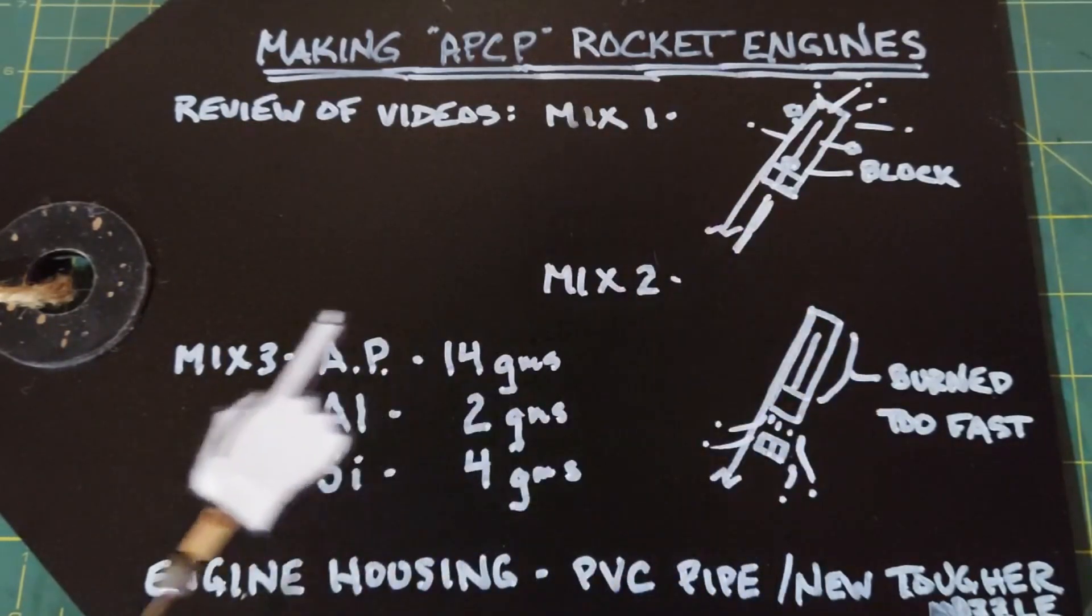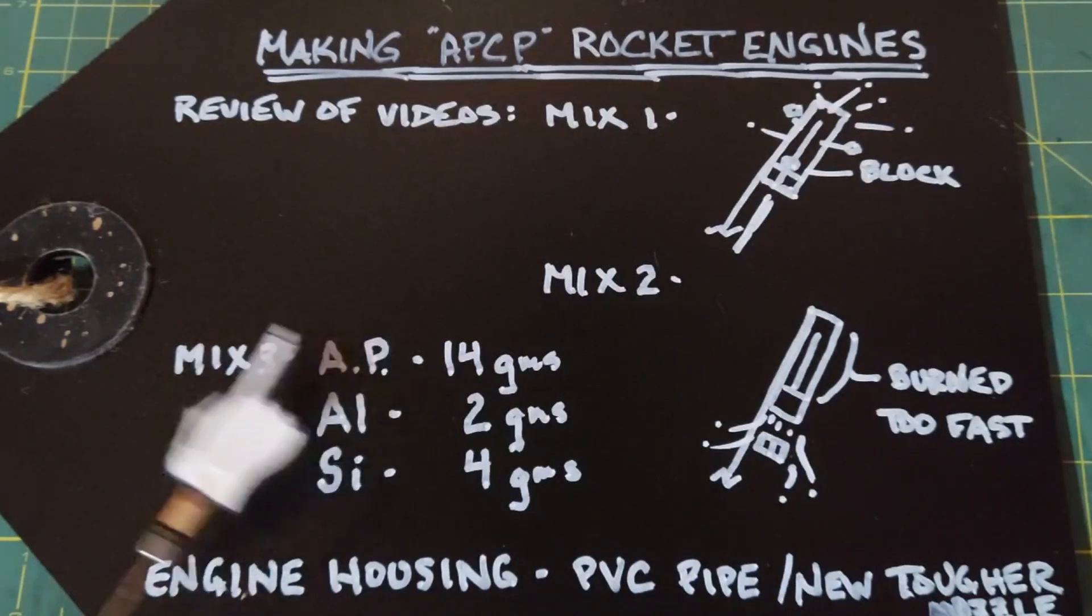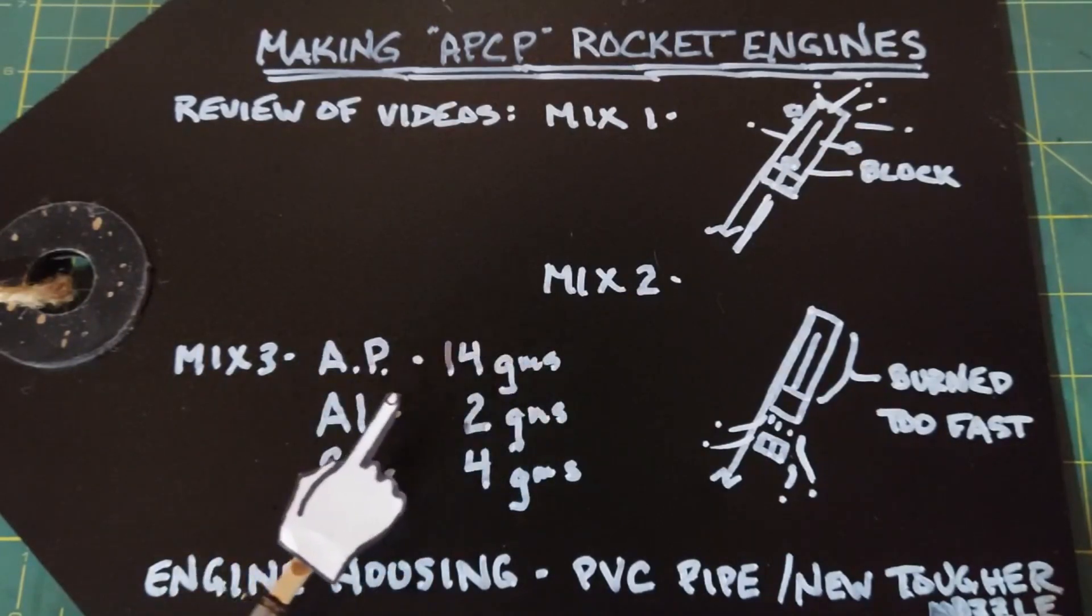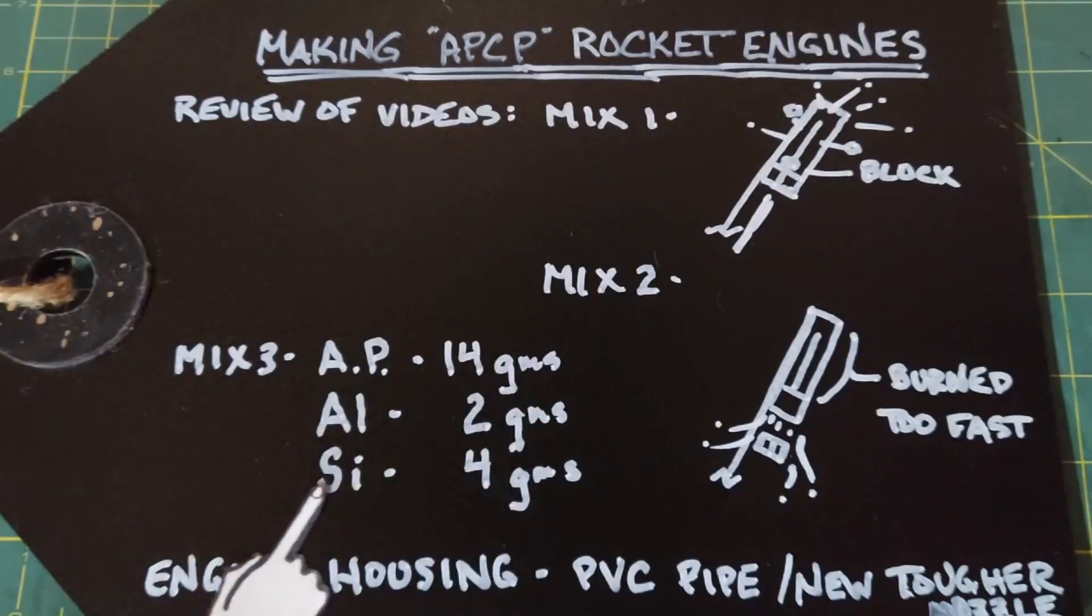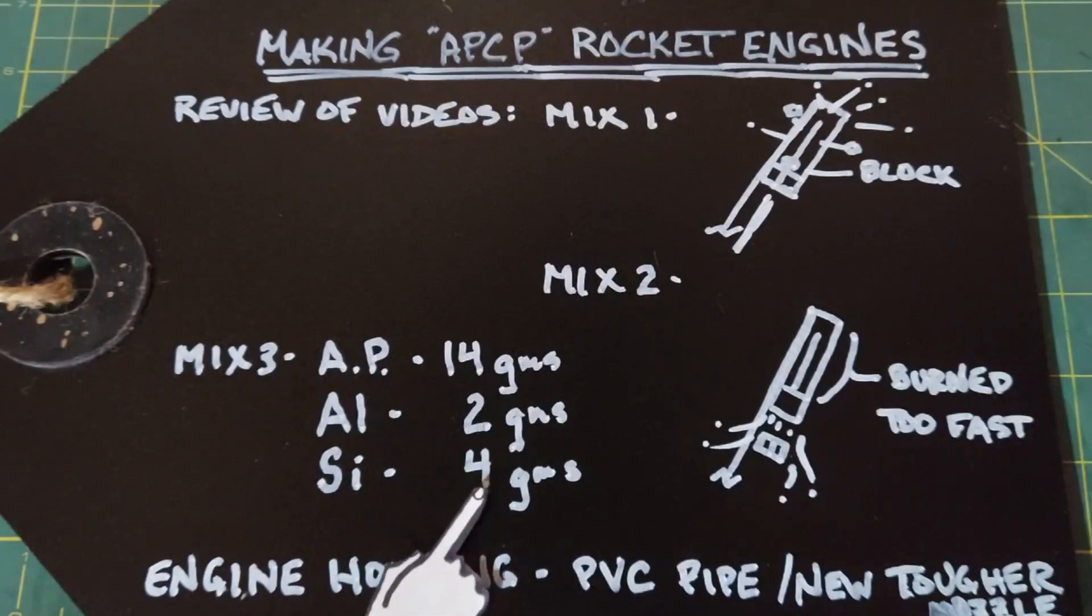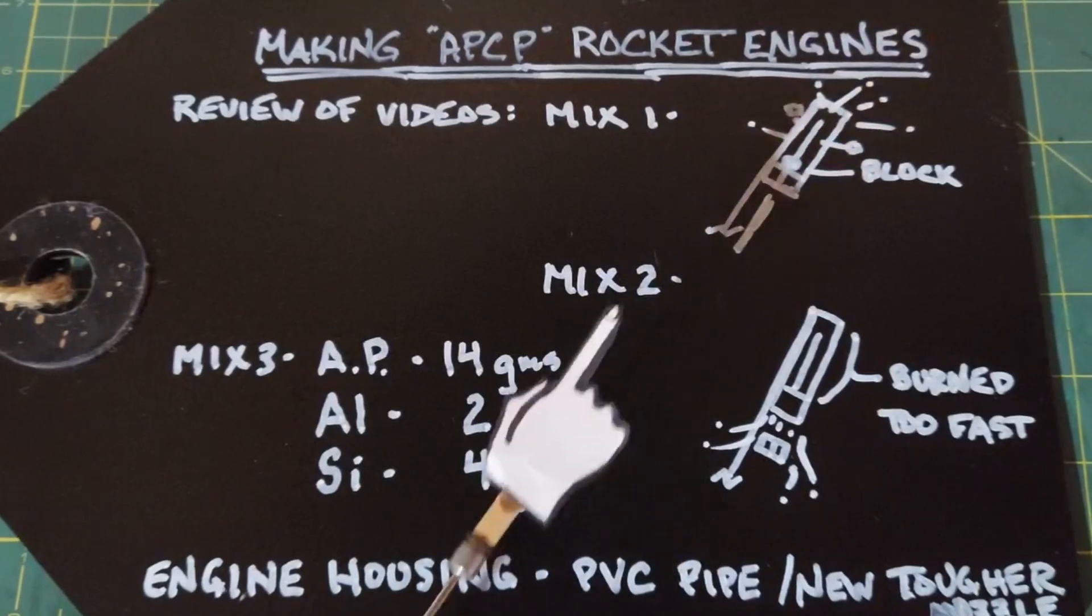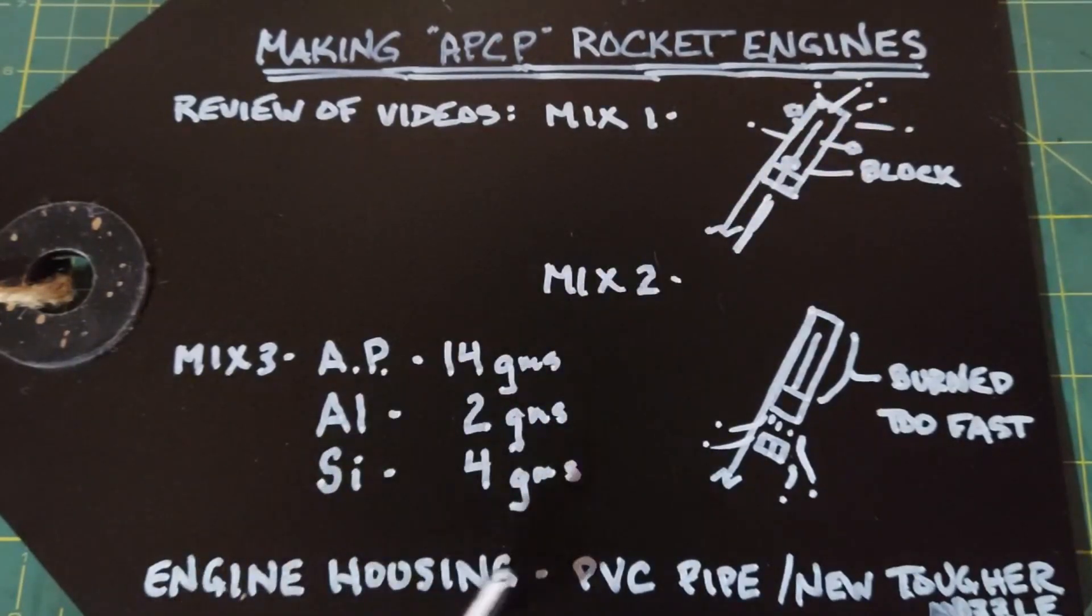This is what I'm proposing, this is what I'm gonna try and do, and that is mix three. I'm going to use the same amount of ammonium perchlorate 14 grams, I'm going to lessen the aluminum because it does drive the speed of the reaction, and I'm going to raise the silicone to four grams which will help slow it a little bit and hopefully we get a mix here that'll be between these two somewhere. The other thing I'm going to do for the engine housing is use a PVC pipe instead of those small really cheap thin housings I was using earlier, and I'm going to come up with a new tougher nozzle.